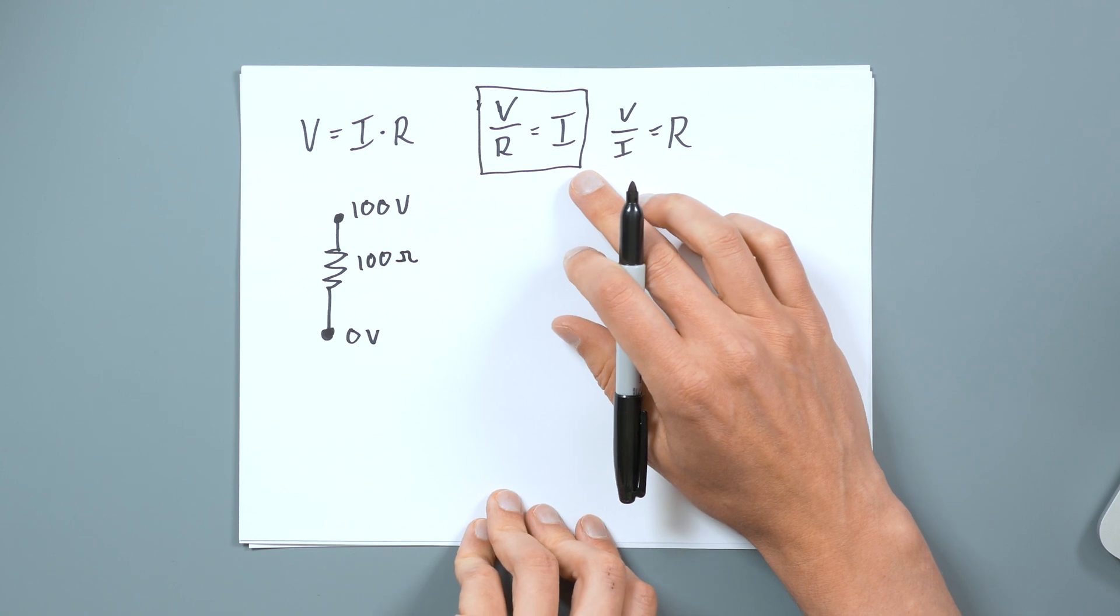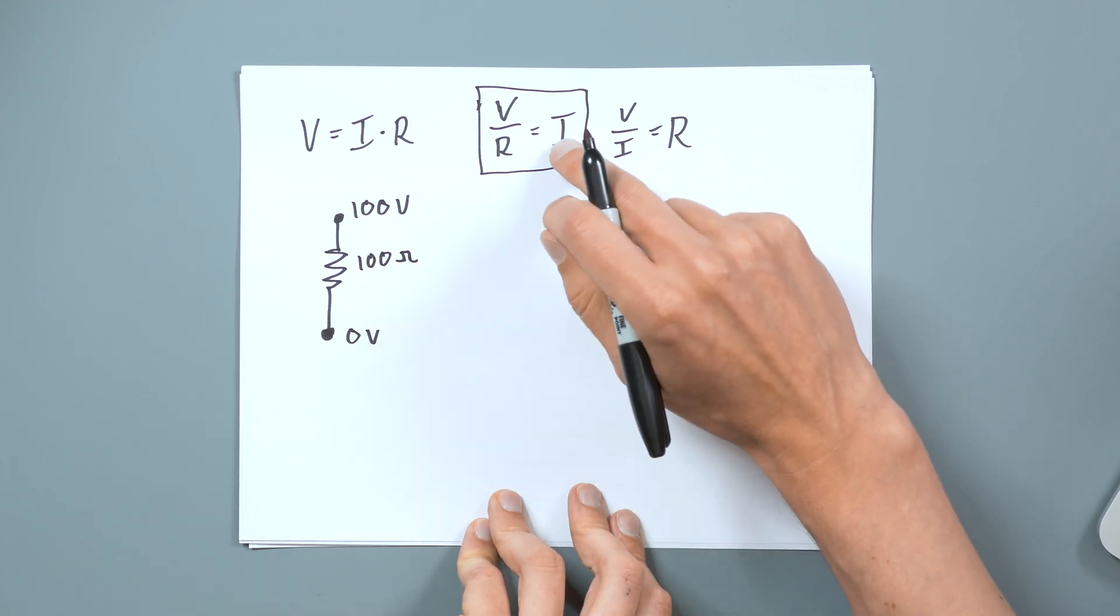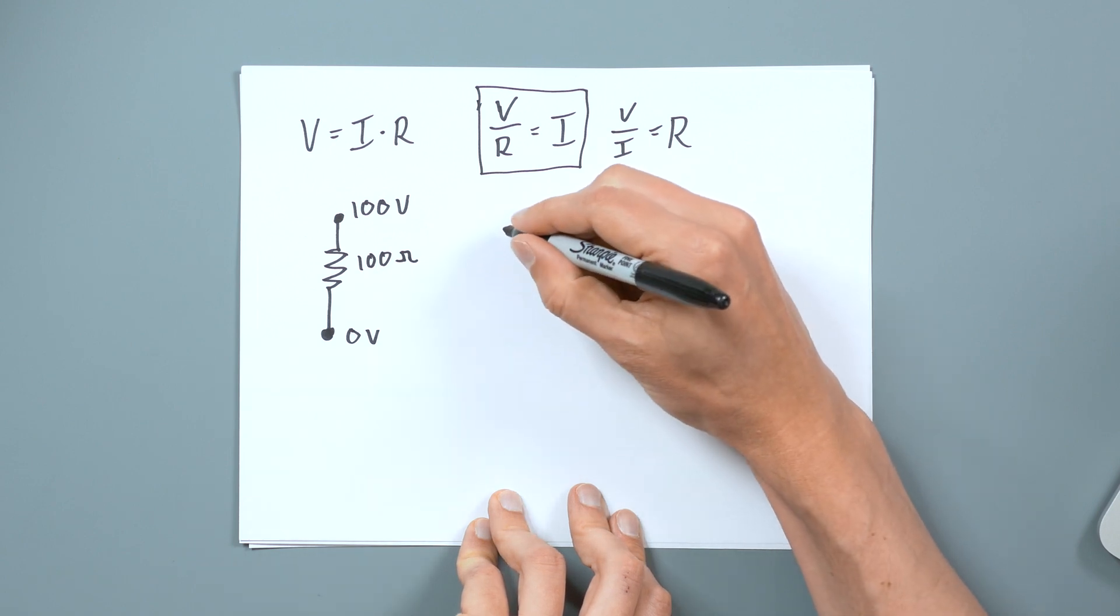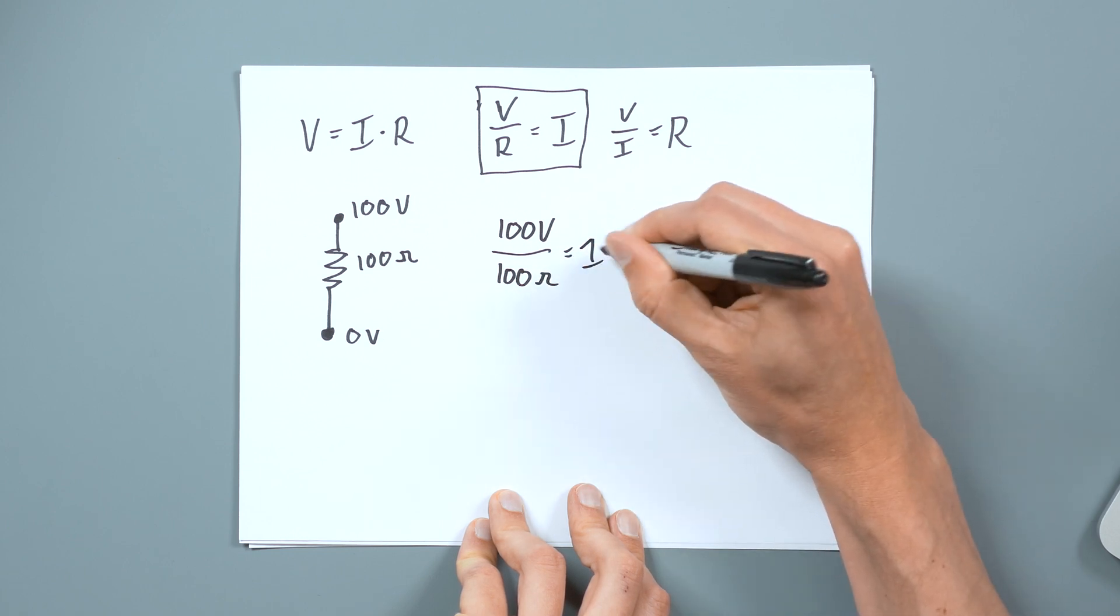We can use Ohm's law to very easily say, okay, we have the voltage and we have the resistance. So we'll want to use this format. We'll say 100 volts over 100 ohms equals one amp.